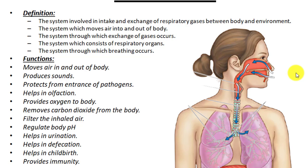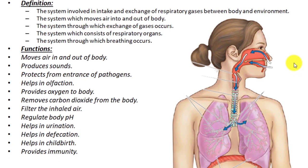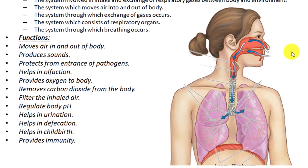The respiratory system provides oxygen to the body. When we inhale, we take different gases into our lungs, but only oxygen diffuses to the blood. It also removes carbon dioxide from the body — during exhalation we exhale a large amount of carbon dioxide.